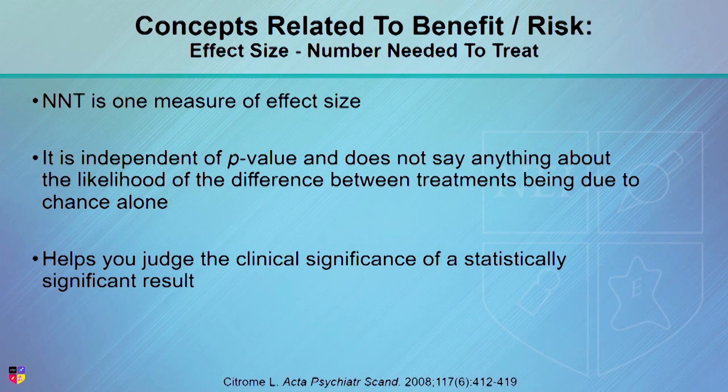I like to use number needed to treat (NNT) to describe effect size. NNT is independent of p-value — it doesn't say anything about the likelihood that the difference is true, but it helps us judge the clinical significance of something that we think is true. A low p-value doesn't tell us something is important; it just tells us the result is likely true and statistically significant, but it doesn't say whether that difference is important.